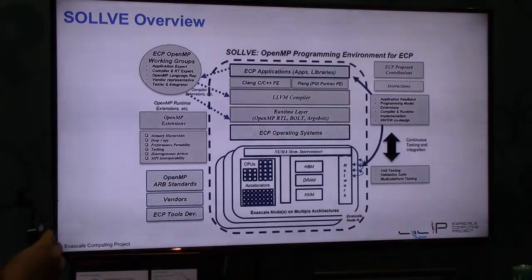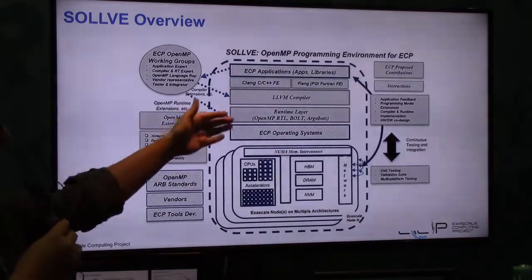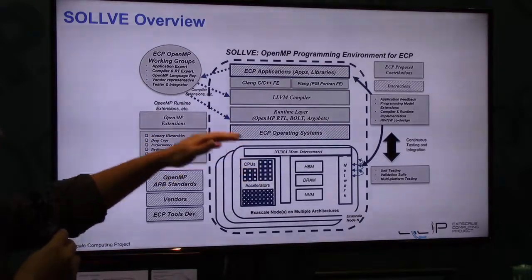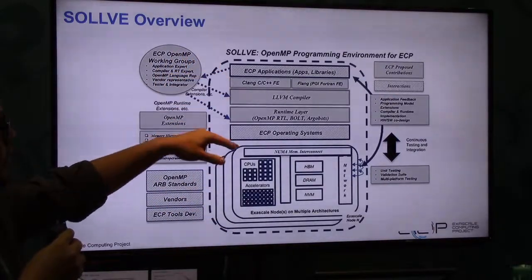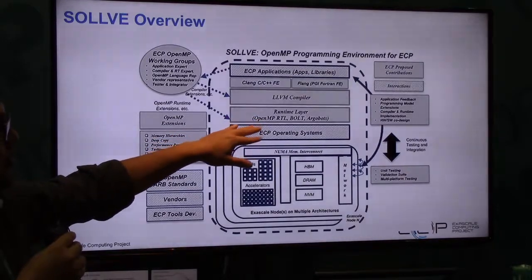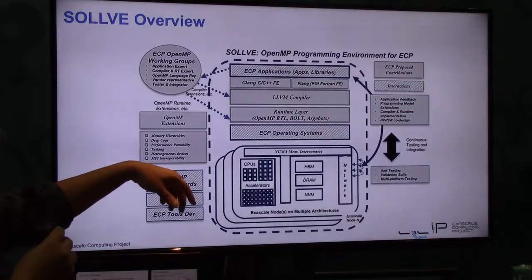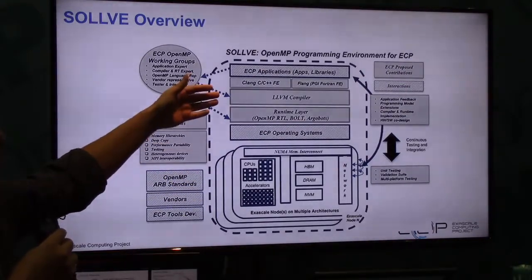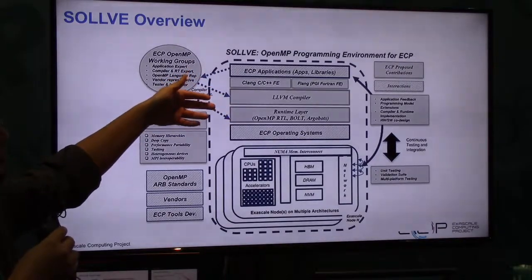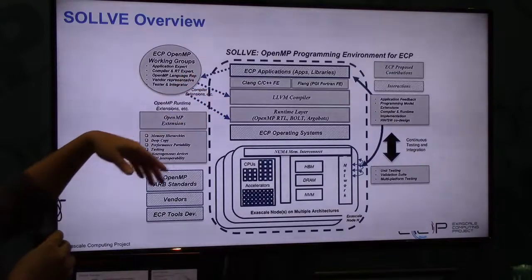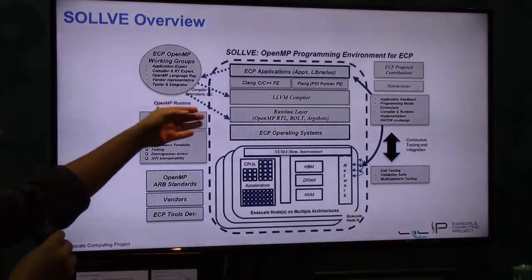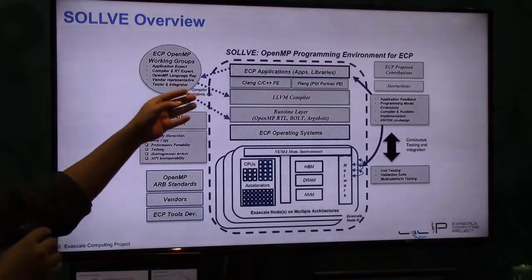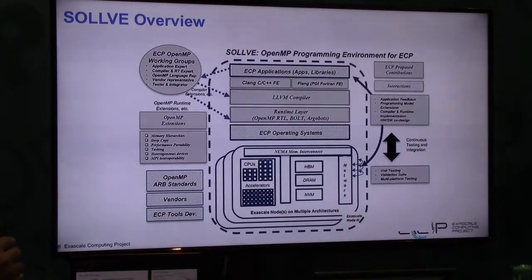This picture gives the basic idea of our vision of the SOLLVE project. SOLLVE and OpenMP will be operating in a larger ecosystem on top of the operating system, interacting with different application libraries and applications. We have the enhanced OpenMP runtime, which will be implemented over BOLT and ArgoBots — the contribution of Argonne National Laboratory. The compiler optimization will be implemented in the LLVM compiler, and LLVM will also provide extensions via the Clang front-end for C and C++, and also for Fortran via the Flang effort, PGI, and the XL compiler from IBM.